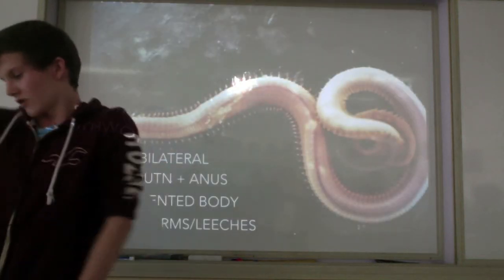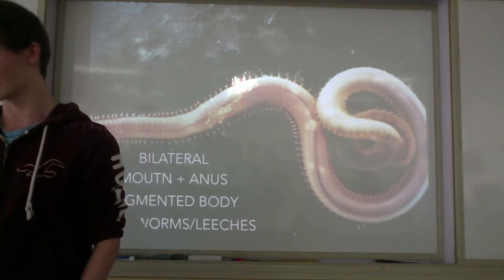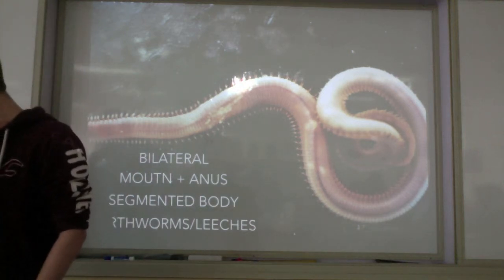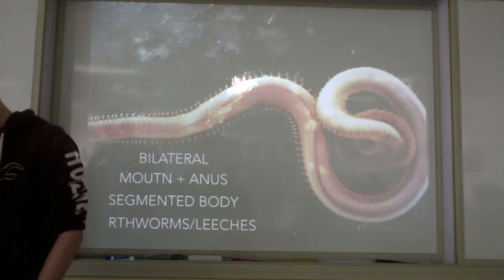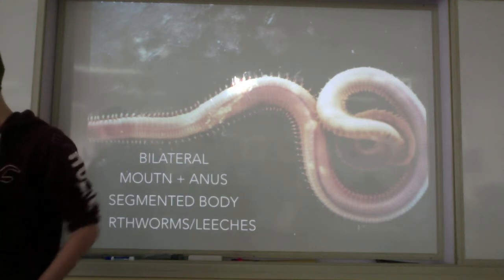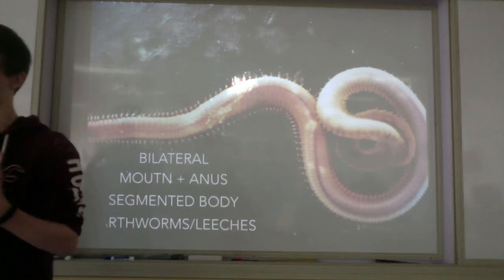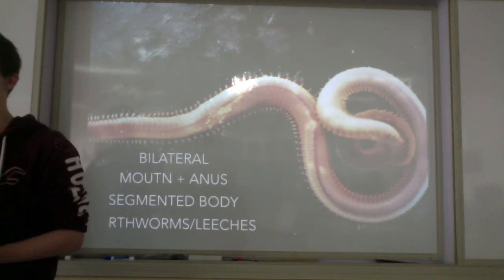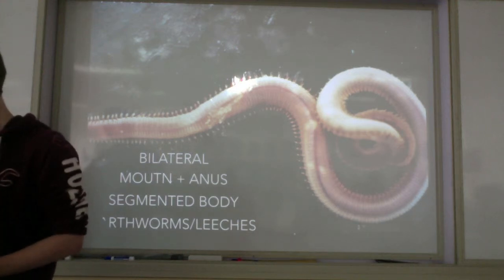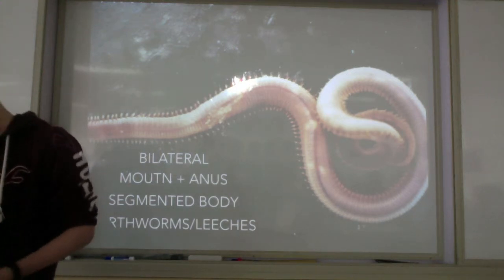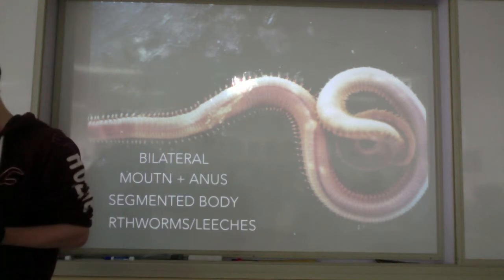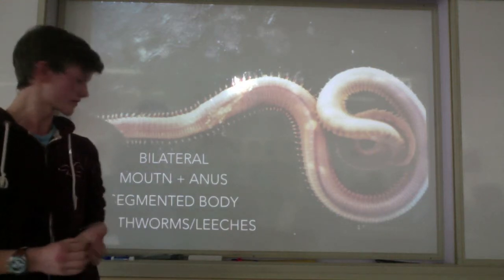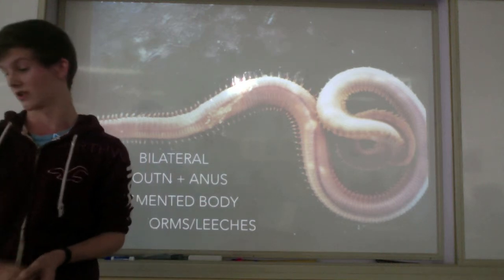Next we have Annelida — earthworms. They have bilateral symmetry, a mouth and an anus, and a segmented body. Examples are earthworms and leeches. Earthworms are hermaphrodites, meaning they have both female and male reproductive cells. They produce both sperm and eggs but still need another worm to complete fertilization. Cleopatra declared them sacred, Aristotle called them the intestines of the soil, and after 39 years of research, Charles Darwin called them the most important part of the world.